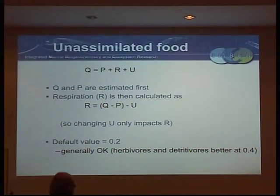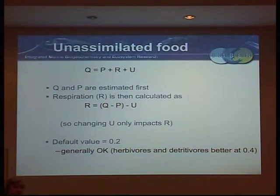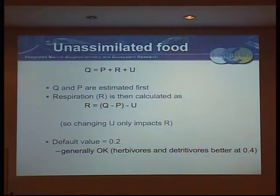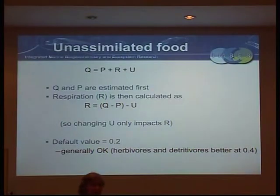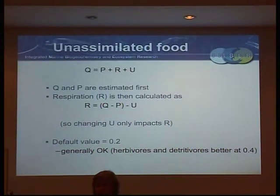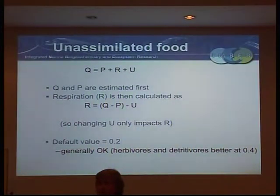The default is about 20% for unassimilated food - that's generally okay. There are a couple of kinds of animals where a slightly higher value makes more ecological sense, but you can refine that as you go through. It's a bit like sketching: if you've ever watched an artist, they sort of sketch in the basic picture first and then fill in the detail.